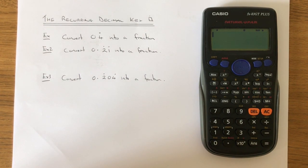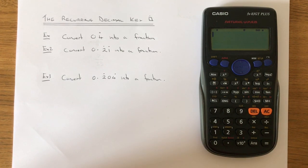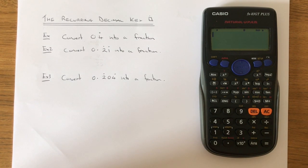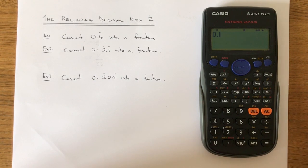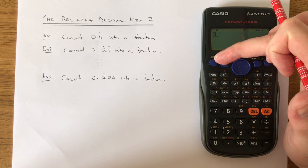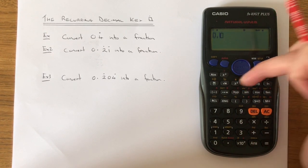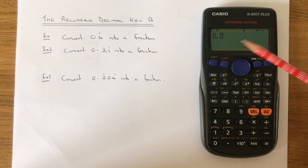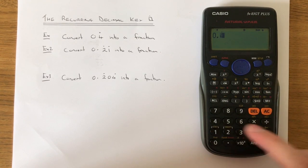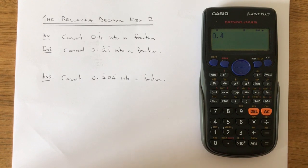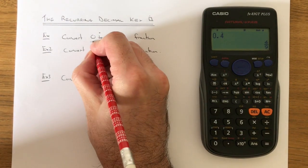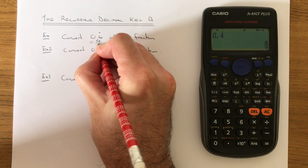So let's have a look at example 1. We need to convert 0.4 recurring into a fraction. First of all, type the 0 in, then the decimal point. Then we need the recurring decimal key, so press shift once and then x squared, and we type the 4 into the recurring decimal box. Hit the equals key and that will convert it into a fraction which is 4 ninths.